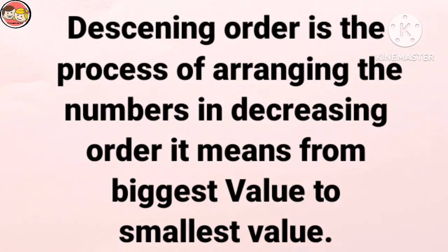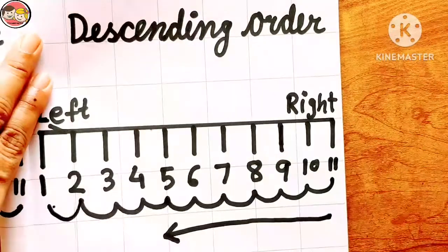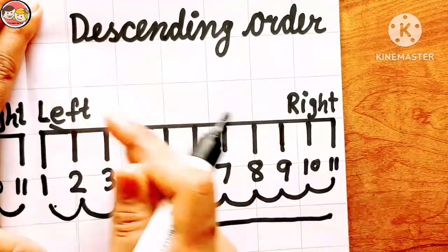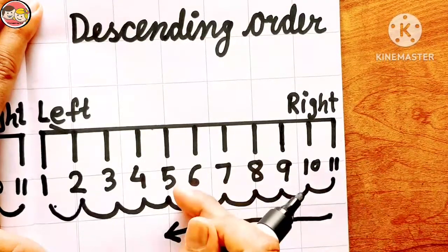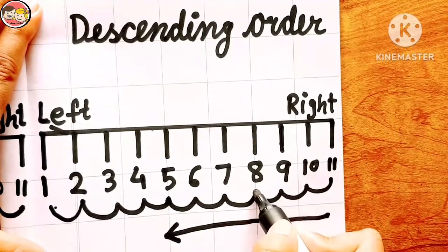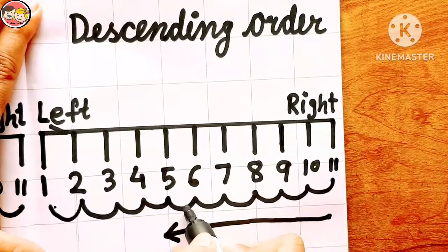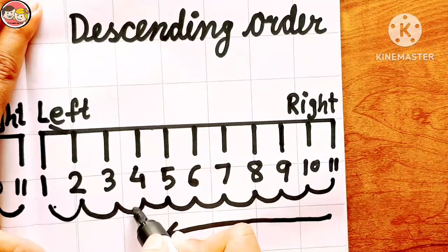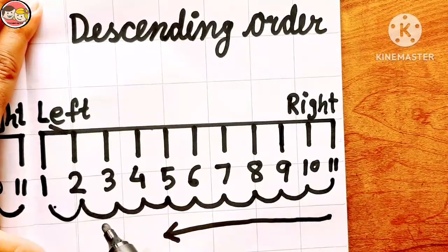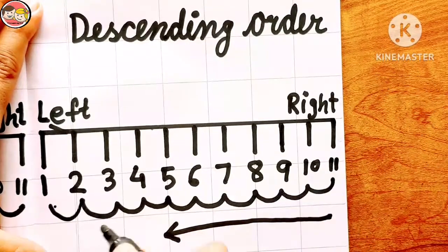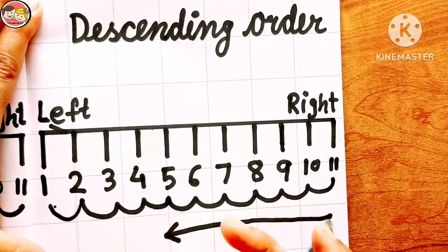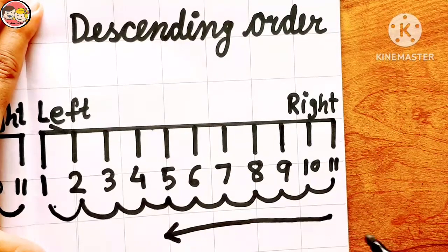This order goes from right to left. Children, look at the number line. This is the right side and this is the left side. Here we start counting from the right side: 11, 10, 9, 8, 7, 6, 5, 4, 3, 2, 1. Observe very carefully — we are moving from right side to left side and the number is decreasing by one every time. That's why descending order is also known as decreasing order.